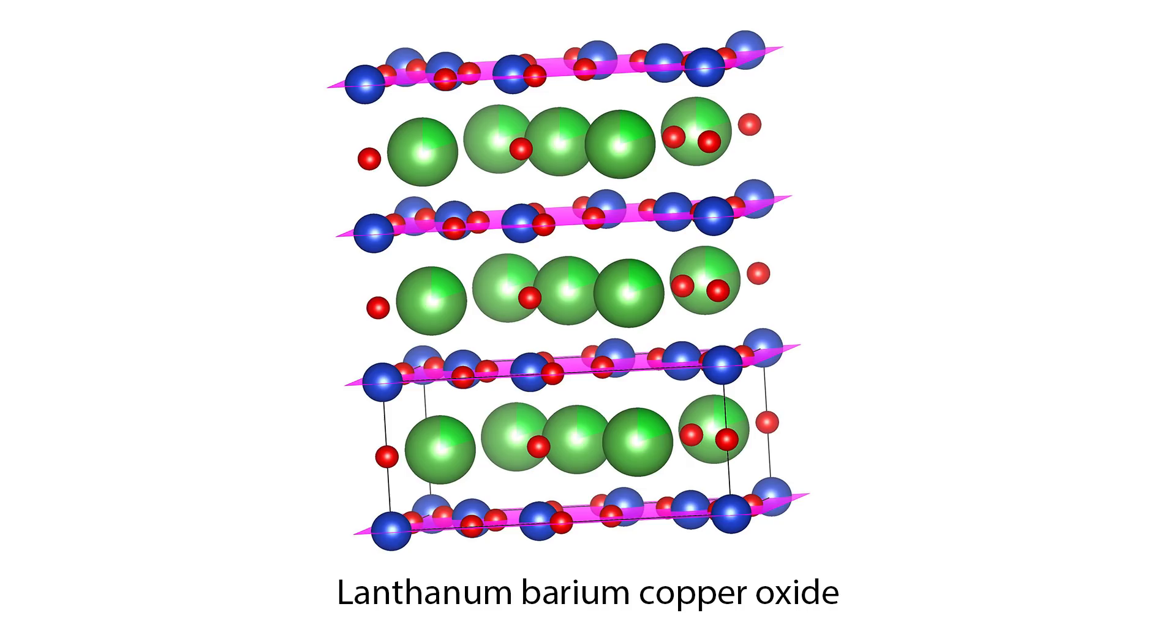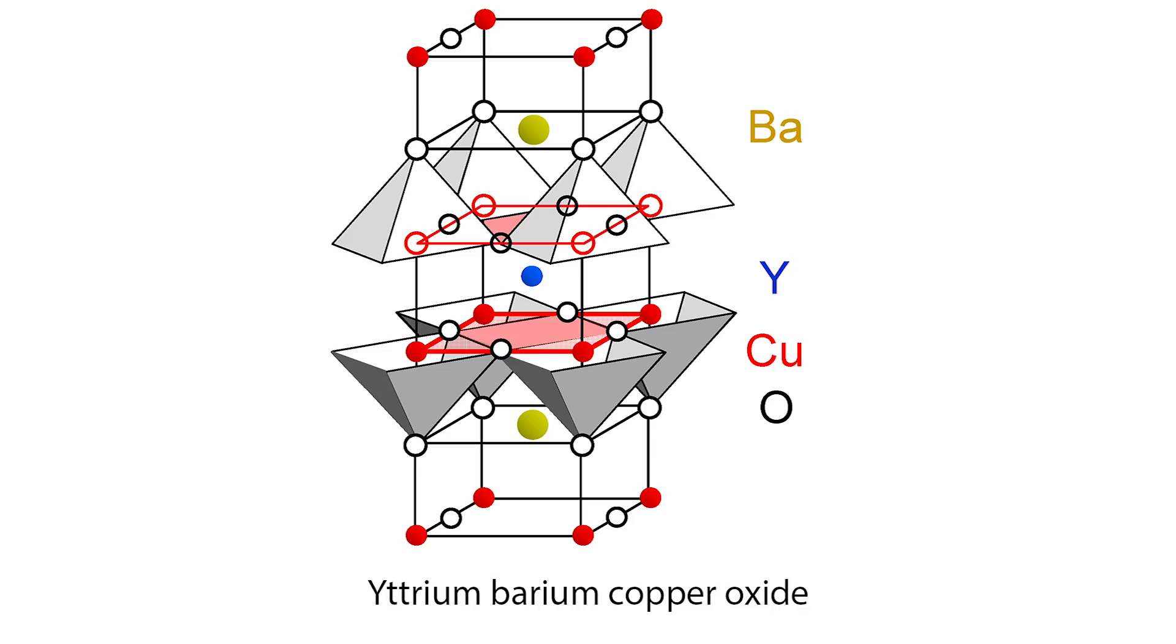Thus, the discovery of a lanthanum-based material with critical temperature of 35 Kelvin in 1986 by Johannes Bednorz and Karl Müller was astonishing, and replacing lanthanum with yttrium to yield a critical temperature of 92 Kelvin was nothing short of miraculous. Not only did this material shatter the predicted temperature boundary, it was possible to study with liquid nitrogen, due to its critical temperature being higher than the boiling point of nitrogen.